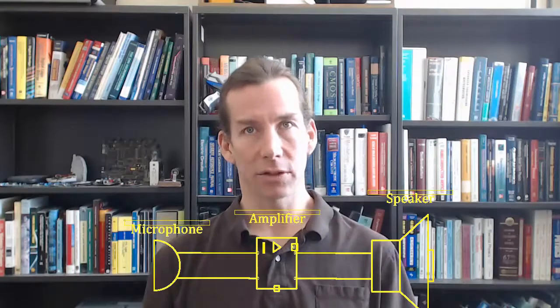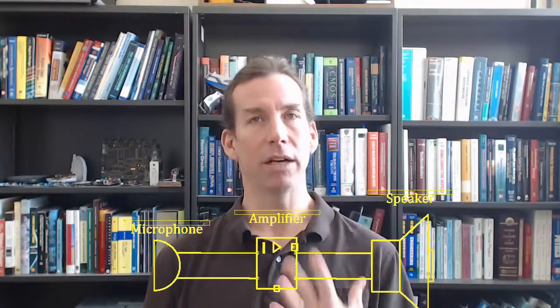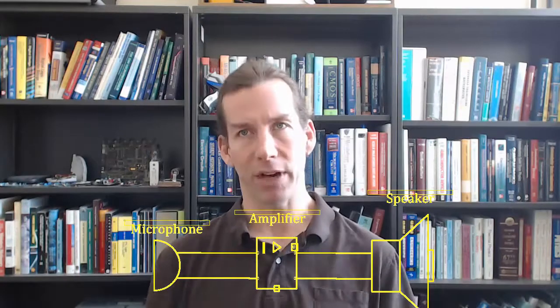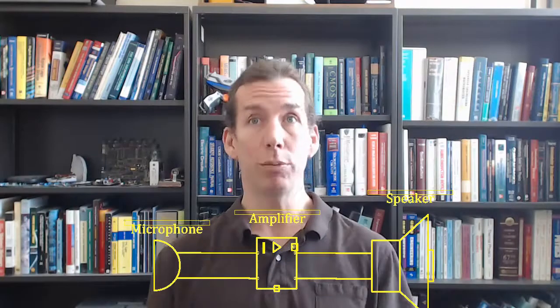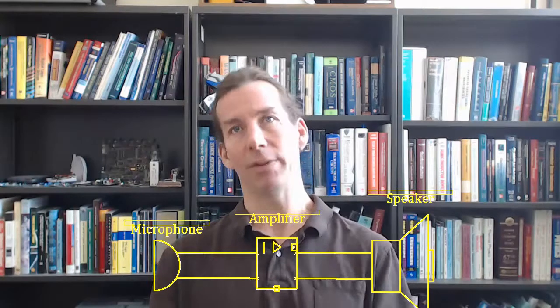Sound is converted to an electrical signal by a transducer called a microphone. This signal will then be amplified by an amplifier and output to another transducer called a speaker, which converts the amplified electrical signal to sound. Since the title of this video is Amplifiers, our focus is going to be on the amplifier.